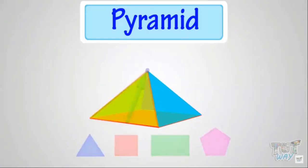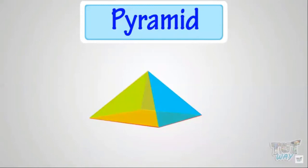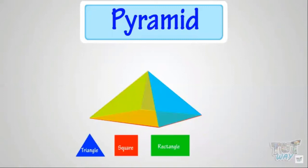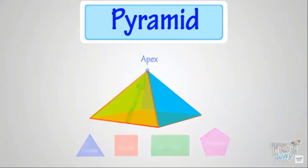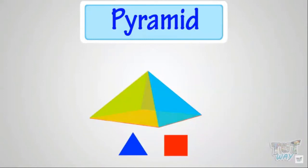I repeat: a pyramid has a single base which can be of any polygon shape like triangle, square, or rectangle, and all other faces are triangular in shape and converge to a single point at the top, which is called its apex. The most common pyramids are those with triangle and square bases.